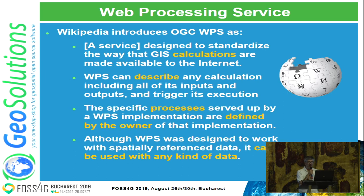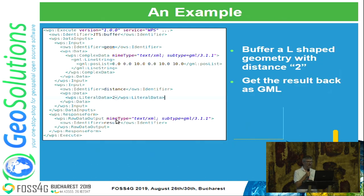WPS is a little bit different from WMS, WFS, or WCS, which are very specific protocols that can do very specific things, while WPS tries to cover all the rest — the ability to do any kind of thing with your geospatial data that is not allowed by the other protocols. For example, transforming some sort of geometry or doing geometric operations like buffering. This is how you call WPS with an XML payload.